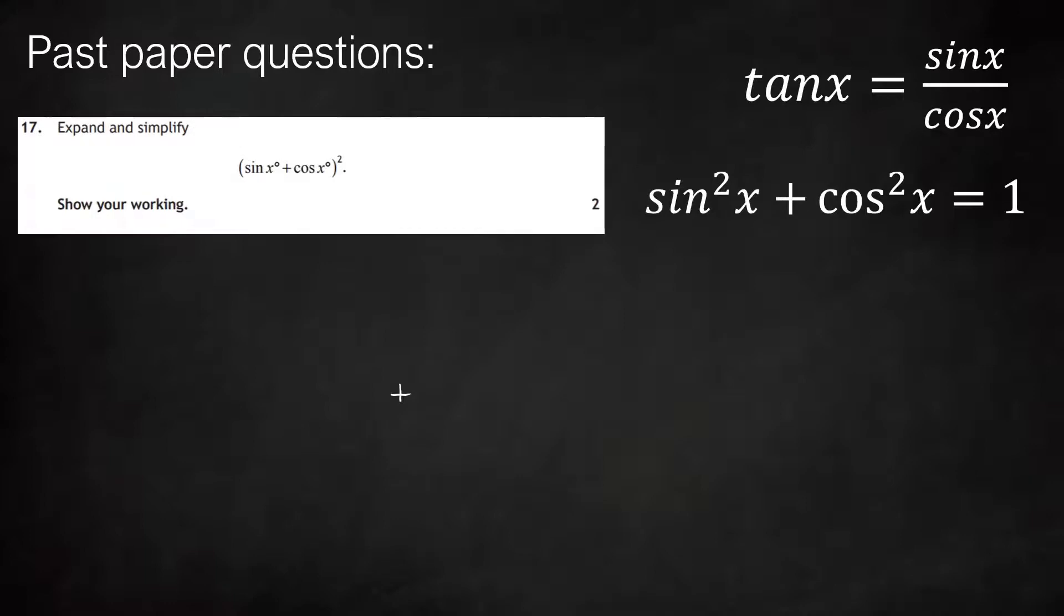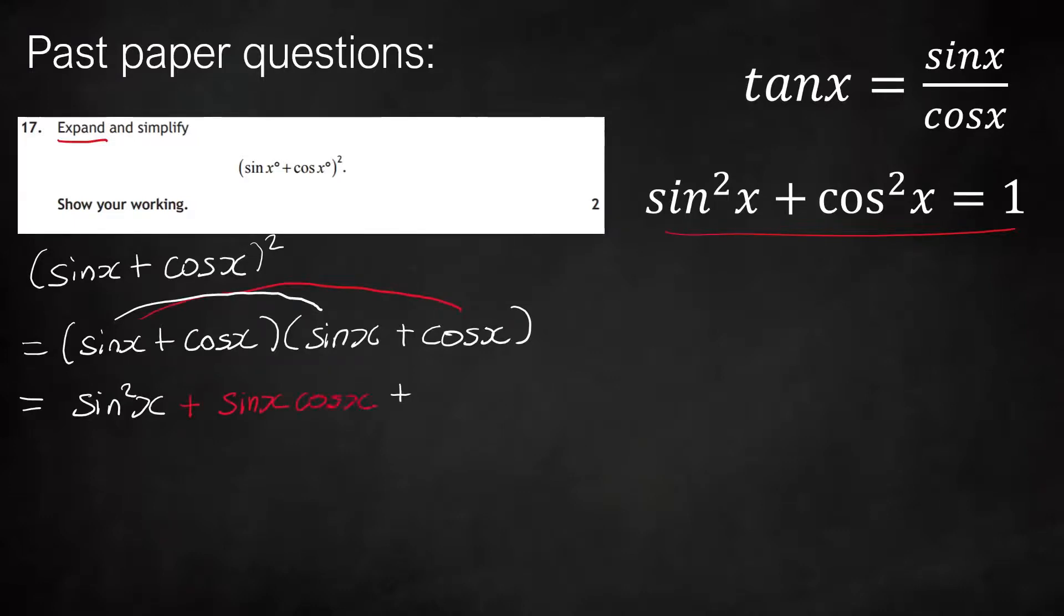On to the next question, it's asking us to expand and simplify this bracket squared. Looking at the question, you might not know where to start, but it's asking us to expand. To expand the bracket squared, we write the bracket out twice and multiply each term by each term. This is called FOIL or rainbow. So first term times first term: sine times sine gives sine squared x. Sine x times the next one gives sine x cos x. Cos times sine is again sine x cos x. The last term, cos x times cos x, gives cos squared x.